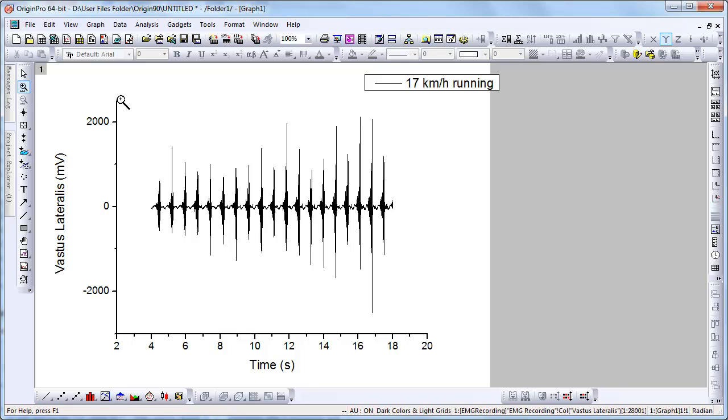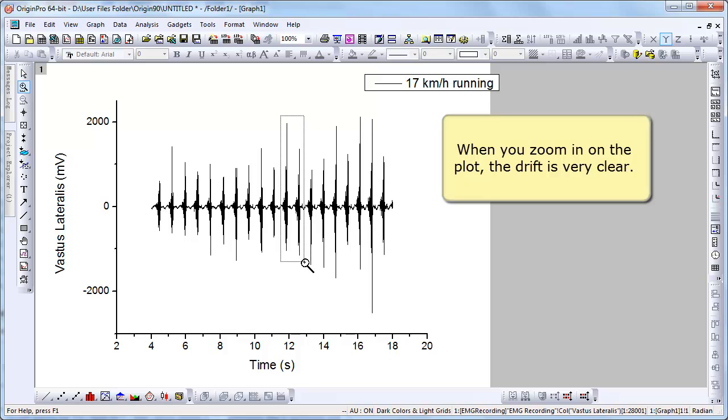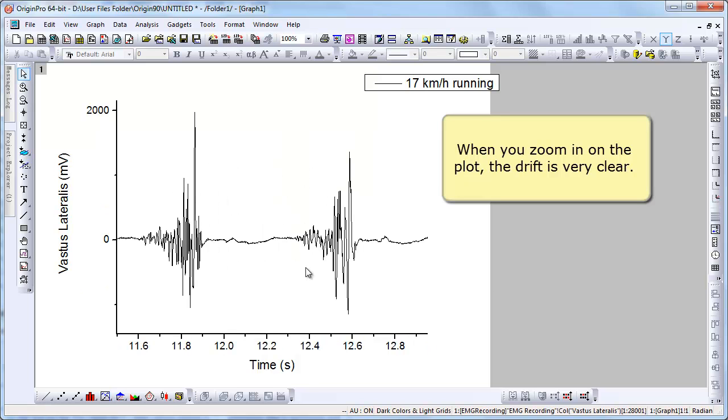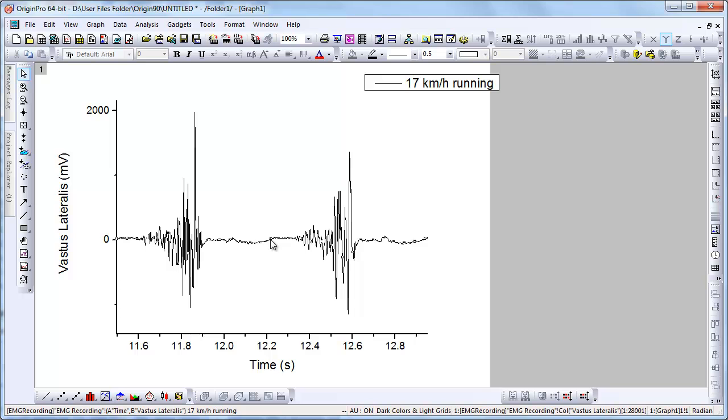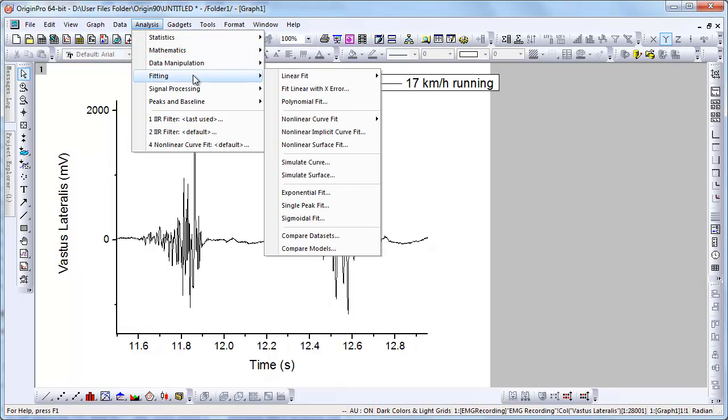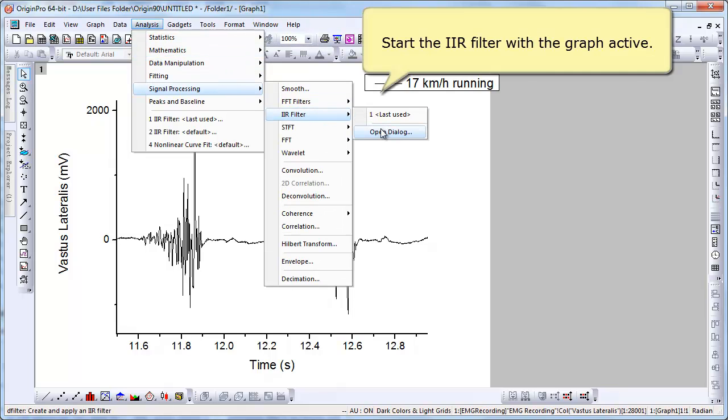We can now zoom in on the plot. When you zoom in, the drift is very clear. To do the filtering, you select Analysis, Signal Processing, IIR Filter.